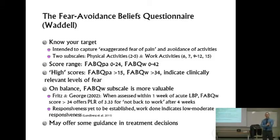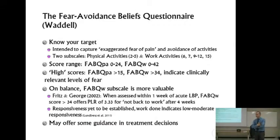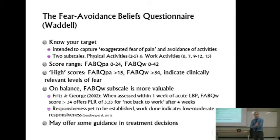One thing to notice is that, while it appears the first scale is obviously physical activities and the second is obviously work, you don't use every item in the calculation of those subscores. For physical activity, you use items 2 through 5. And for work activities, you use items 6, 7, 9, 10, 11, 12, and 15.